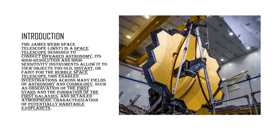This James Webb Space Telescope is called JWST. It is the short form of James Webb Space Telescope. J stands for James, W stands for Webb, S stands for Space, and T stands for Telescope. So in the name only, James Webb Space Telescope represents that it is a space telescope.